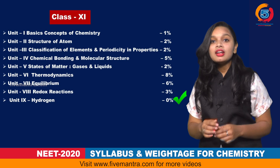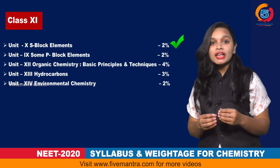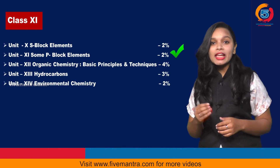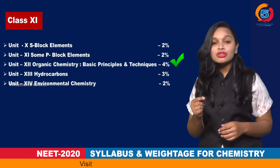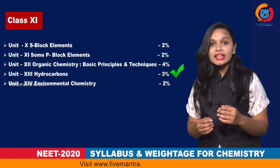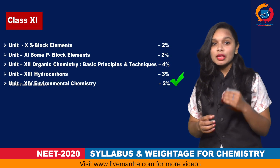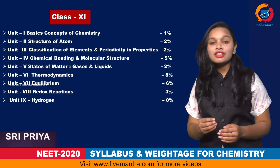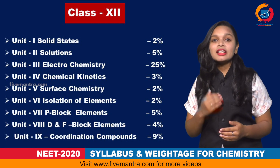Unit 8, Redox Reactions, has 3% weightage. Unit 9, Hydrogen, has no significant weightage — you should refer to it but there is less emphasis. Unit 10, S Block Elements, has 2% weightage. Unit 11, Some P Block Elements, has 2% weightage. Unit 12, Organic Chemistry — Basic Principles and Techniques, has 4% weightage. Unit 13, Hydrocarbons, has 3% weightage. Unit 14, Environmental Chemistry, has 2% weightage. All these chapters together total 100% weightage for intermediate first year chemistry.